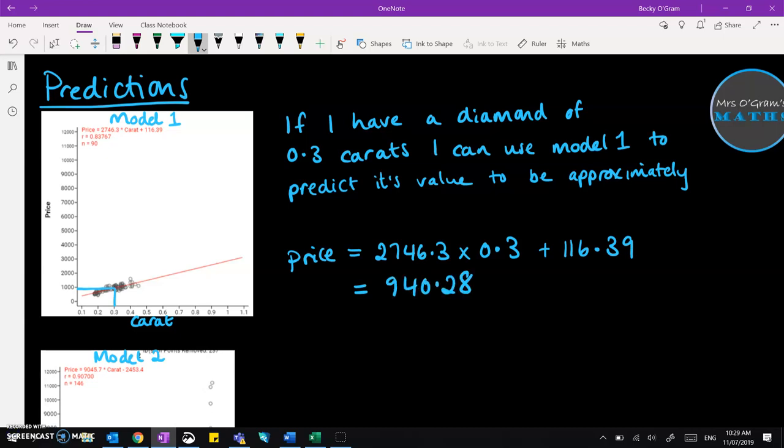On the working out, give the full answer to that equation. But when you're giving your prediction, you should round that appropriately. So finishing off that sentence, I can use model one to predict its value to be approximately $940. It needs to be rounded appropriately and put into the correct context and units. This bit at the bottom just shows my working.